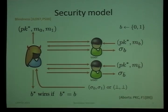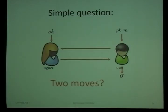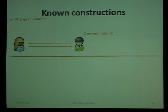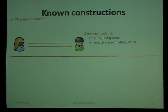There is a stronger definition that also accounts for aborts, which we also examined at PKC. Coming back to the fundamental question: can we build a blind signature scheme with two moves in the standard model? Over 18 papers have been published. The first was by Chaum, based on an RSA variant, and Boldyreva also managed to construct a scheme with two moves. Unfortunately, both schemes rely on an interactive assumption or an additional oracle, and both need the random oracle.